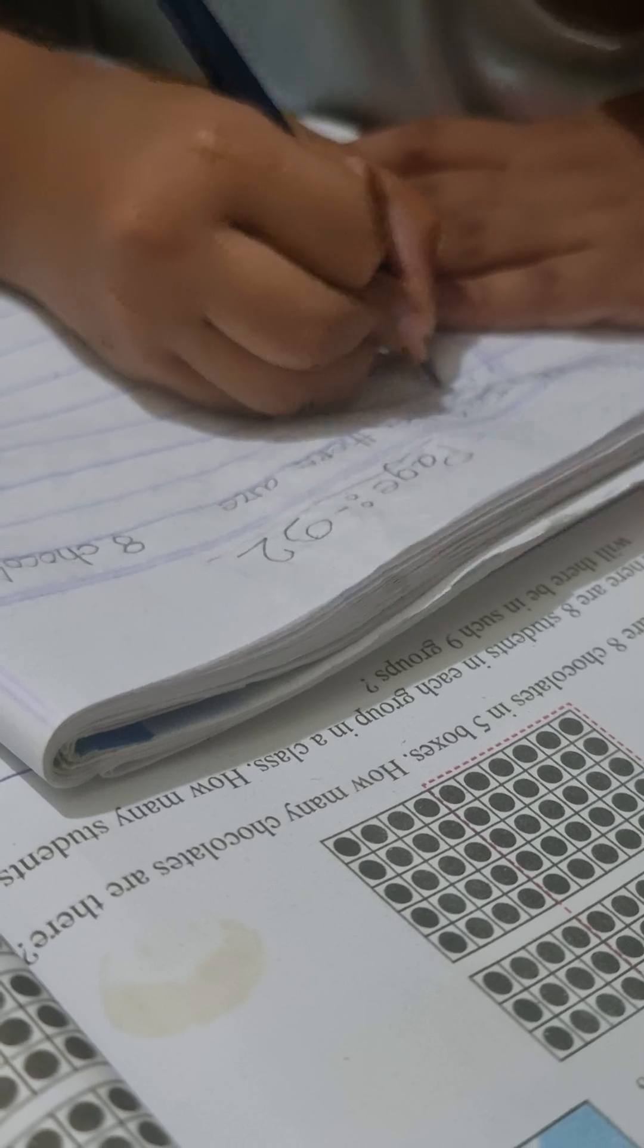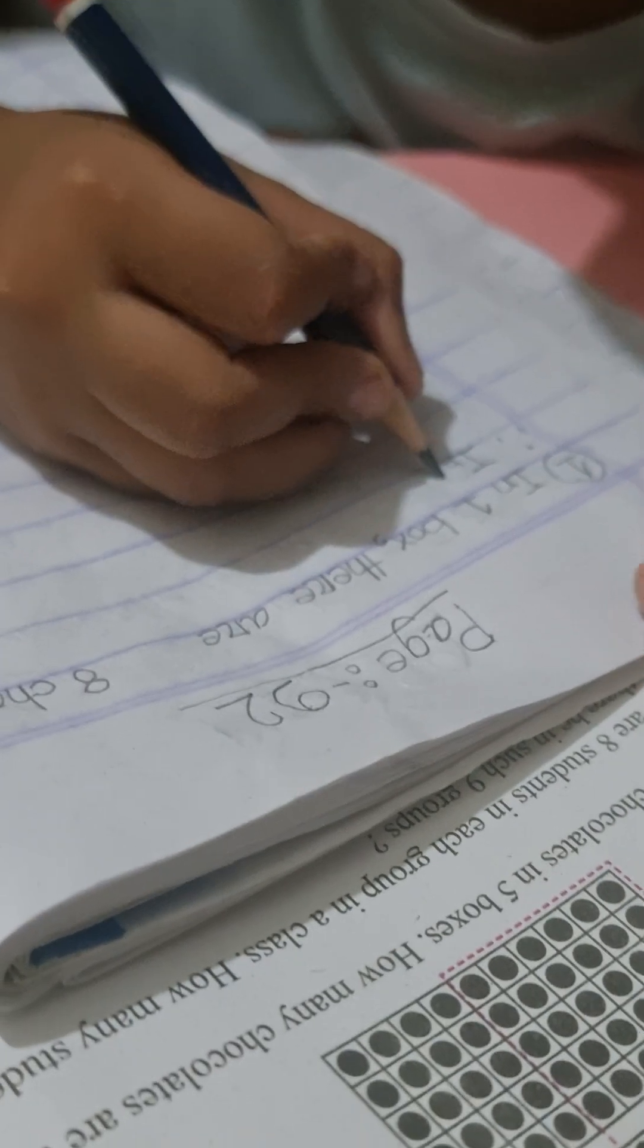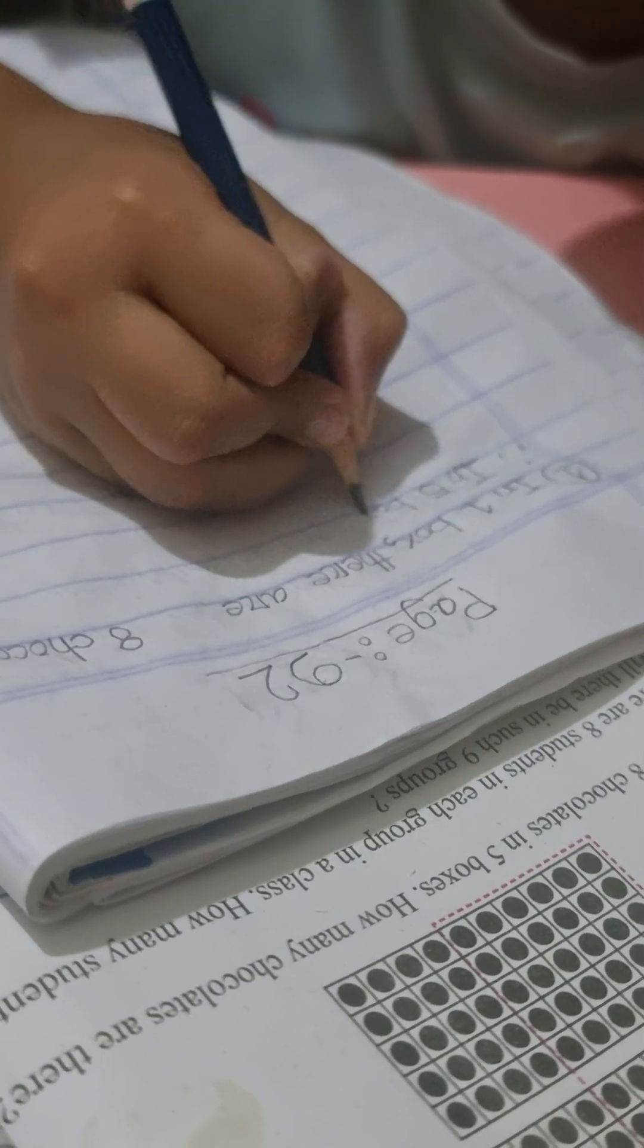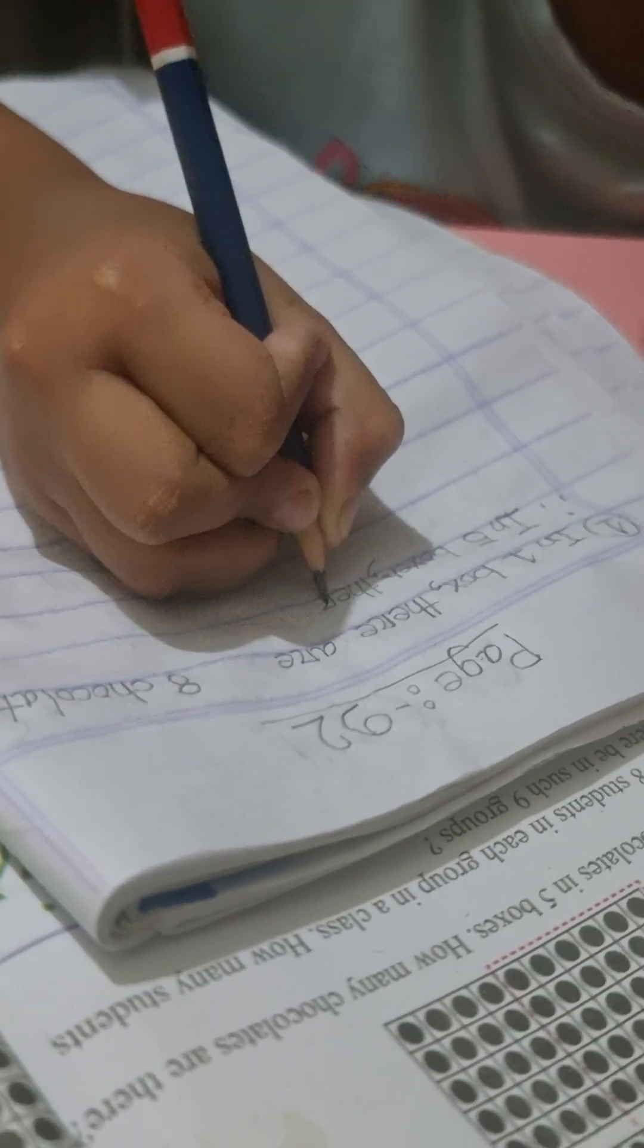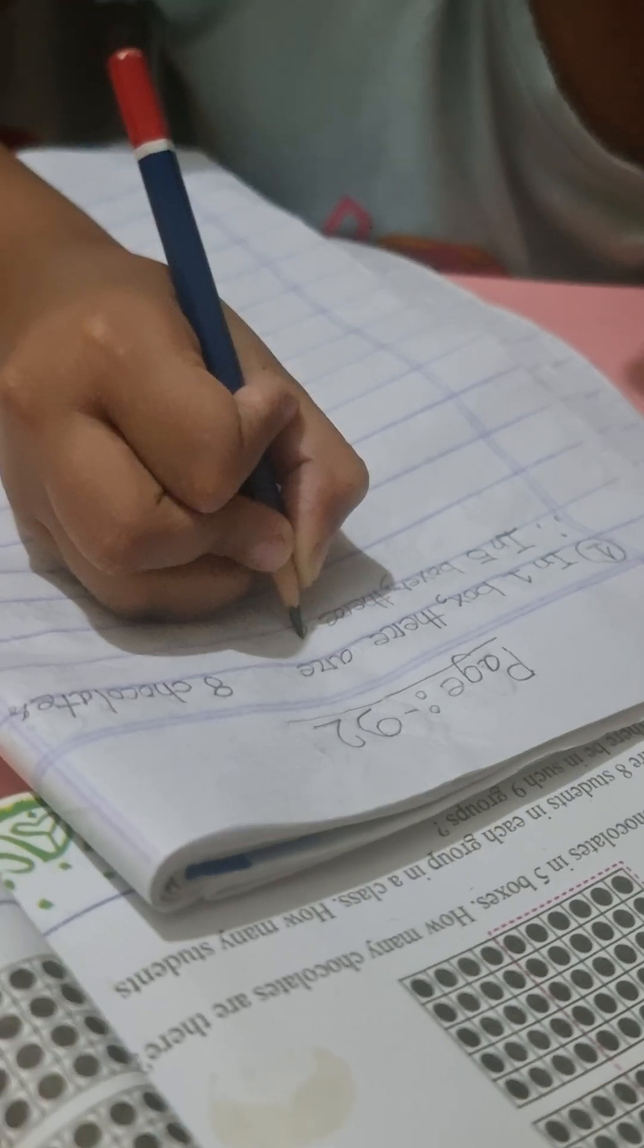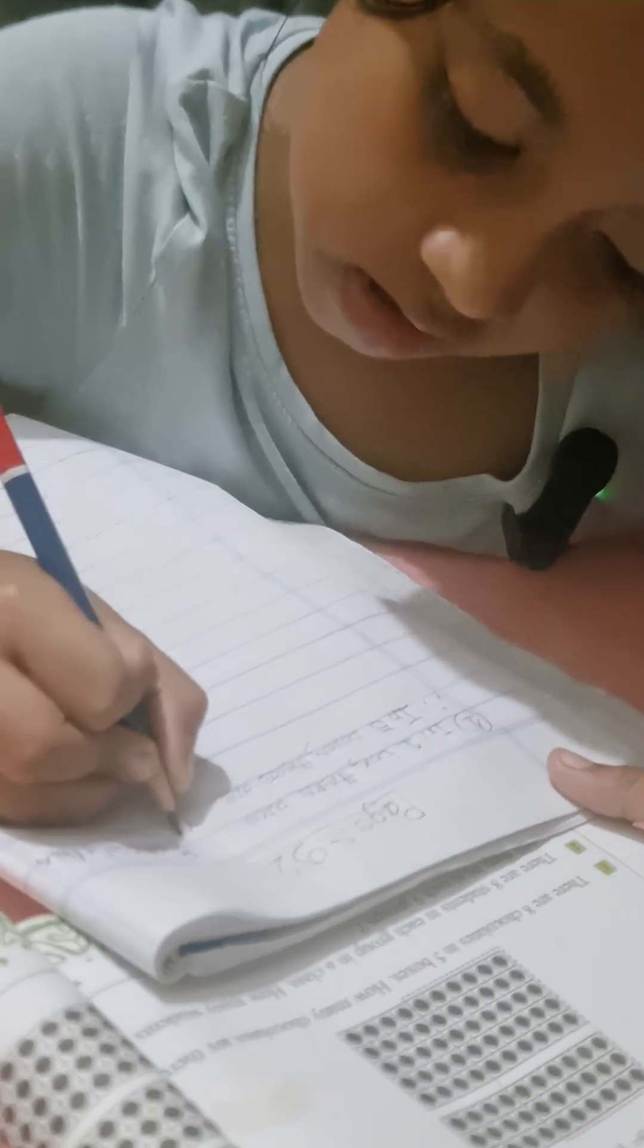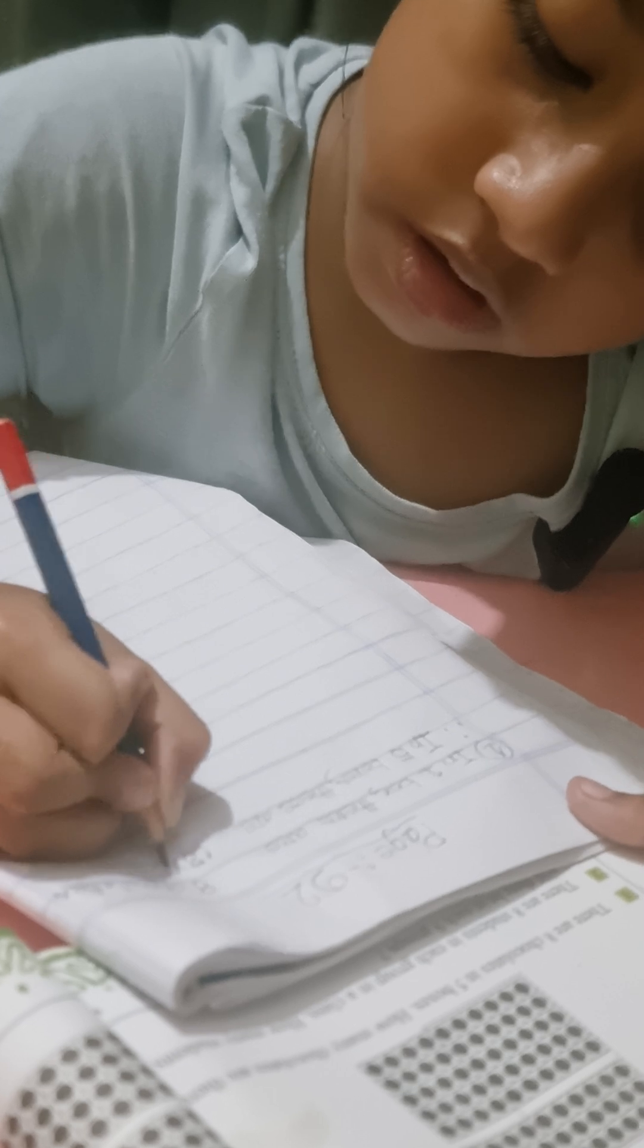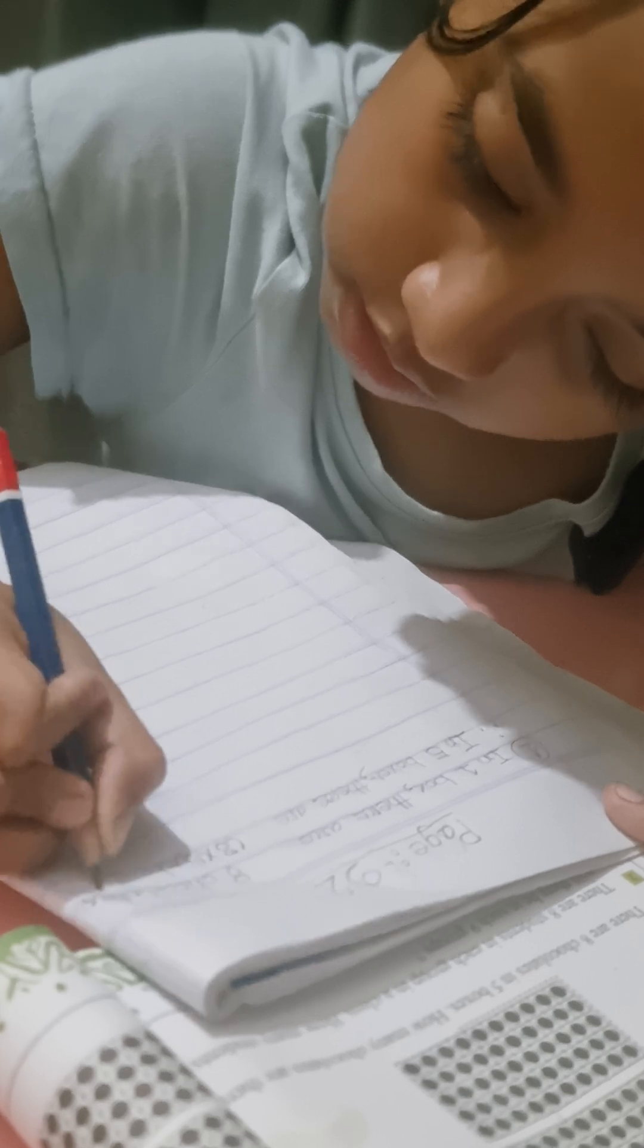So in five boxes there are how many chocolates? Eight into five chocolates.